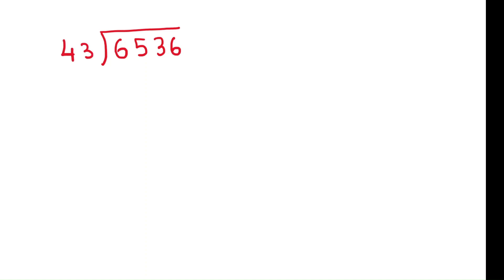Cross the last digit of the divisor and write it here beside the quotient area. Now start doing the division: 4 times 1 is 4. 6 minus 4 is 2. Now bring down the next number, which is 5.